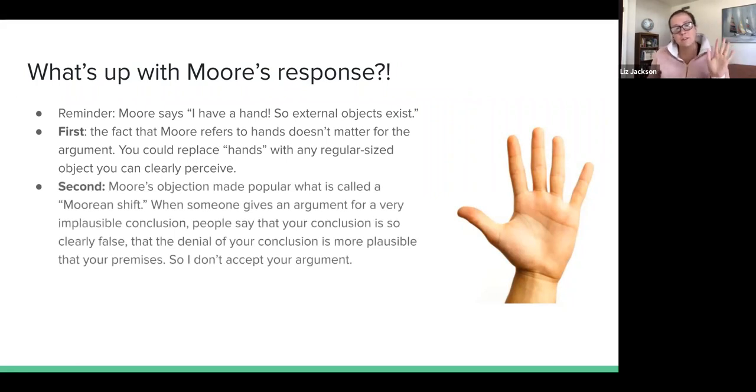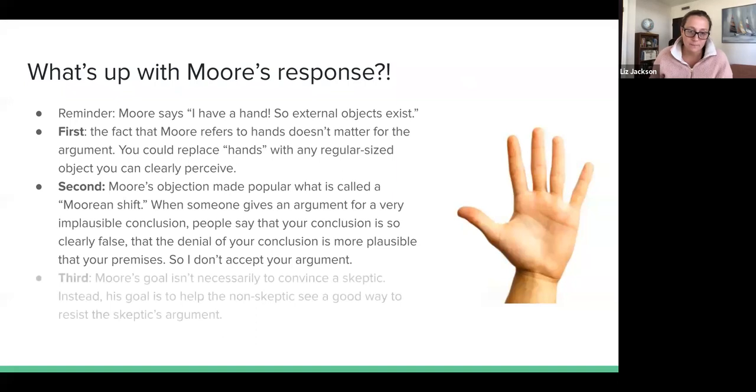The second thing that you might find interesting is that Moore's objection made this thing in philosophy popular called a Moorean shift. And so when someone gives an argument for a very implausible conclusion, some people say, look, the conclusion of your argument is so clearly false that one of your premises has to be false, even if I can't tell you which premise. So I don't accept your argument. This is called a Moorean shift because you're not saying this premise is false. You're just saying that conclusion can't be right. It defies common sense. And some people thought that Moore is one of the people that brought back in this common sense philosophy, common sense epistemology.